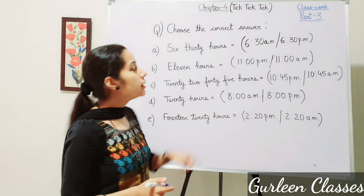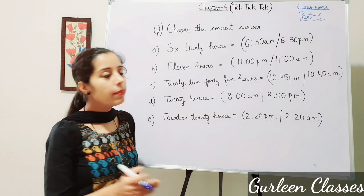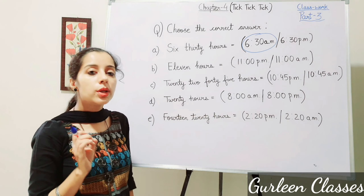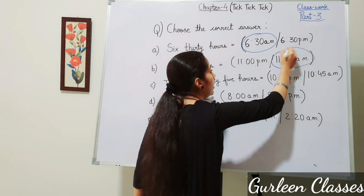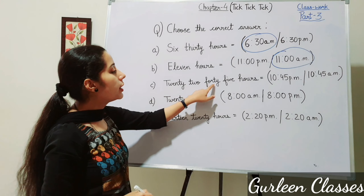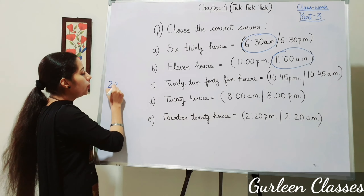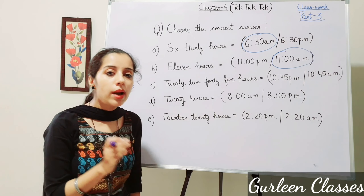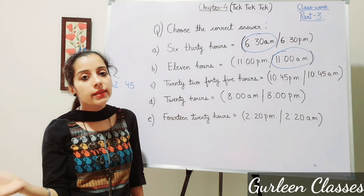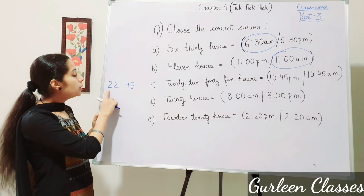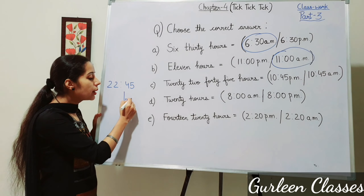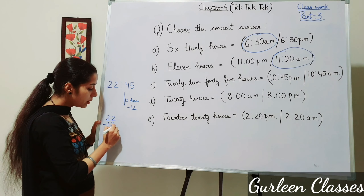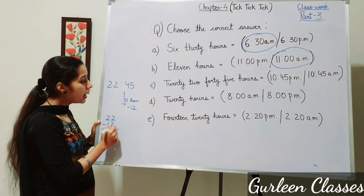Next question: Choose the correct answer. Part A: 6:30 hours — it is before PM so it is 6:30 AM. Part B: 11 hours — it will be 11 AM. Part C: 22:45 hours — this is a 24-hour clock. The 24-hour clock runs from midnight to midnight. To convert to 12-hour clock, subtract 12: 22 minus 12 equals 10, so it is 10:45 PM.